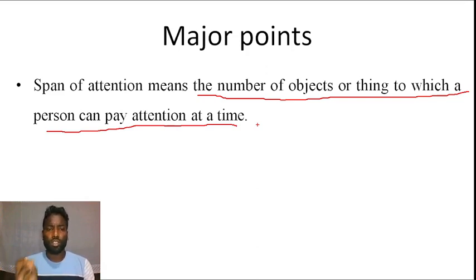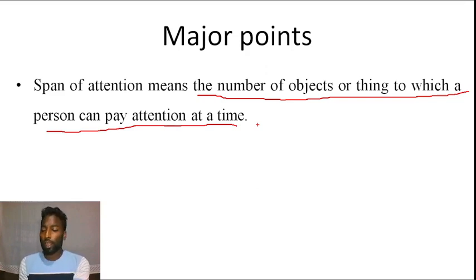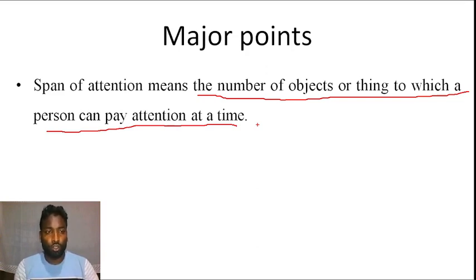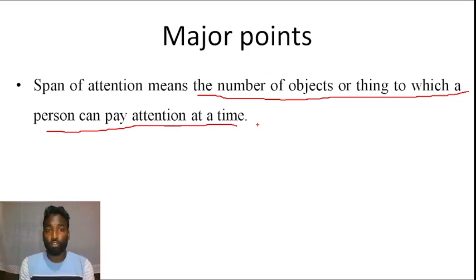For a relevant example: suppose you have physics, chemistry, political science, and a side subject — how many of these can you pay attention to at the same time? That is span of attention. It is the number of objects toward which a person can pay attention at a given time — that number is the span of attention.